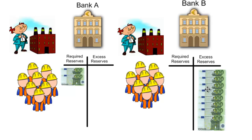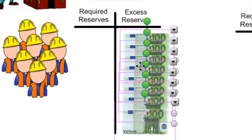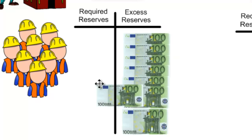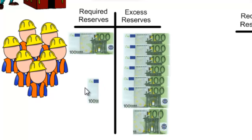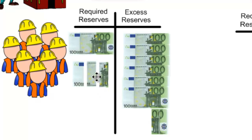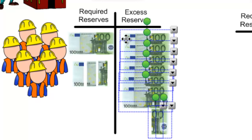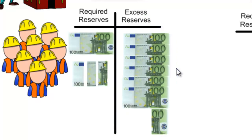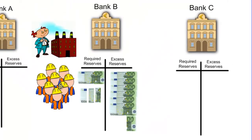Now we have 800 euros in Bank B. With the reserve requirement of 0.2, Bank B must set aside 160 euros into its required reserves, leaving Bank B with 640 euros in its excess reserves. Bank B wants to loan this money out so that it can charge interest to borrowers and earn a profit by paying its savers a slightly lower interest rate.